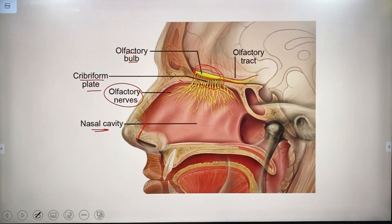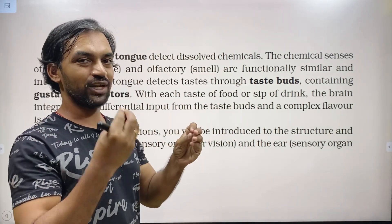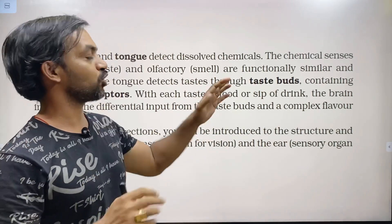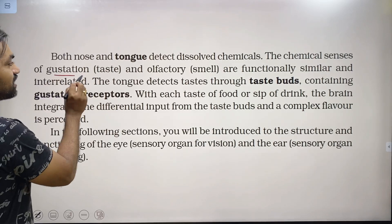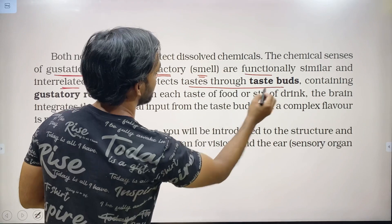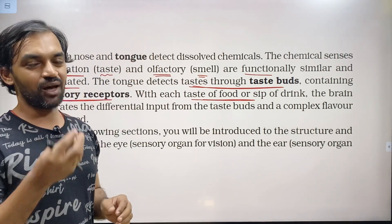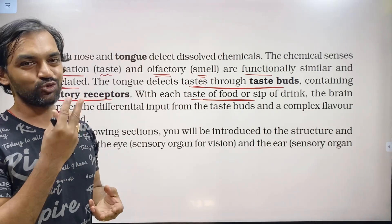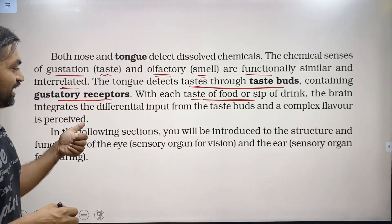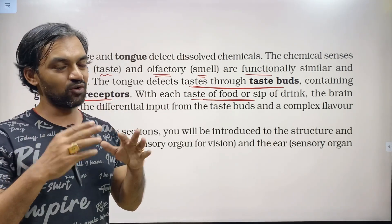The tongue detects dissolved chemicals through taste buds containing gustatory receptors. With each taste of food or sip of drink — whether biryani, juice, coffee, tea, or ice cream — the brain integrates the differential input from the taste buds and a complex flavor is perceived.